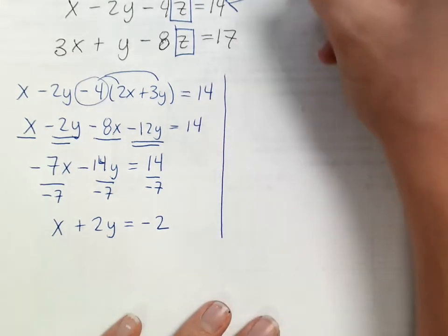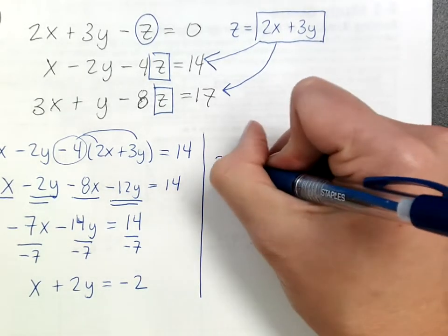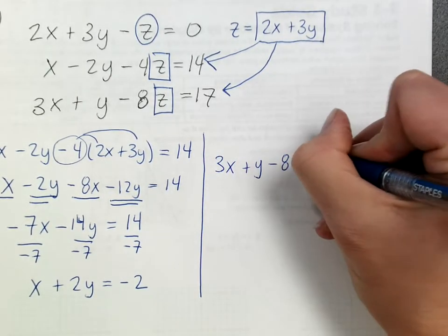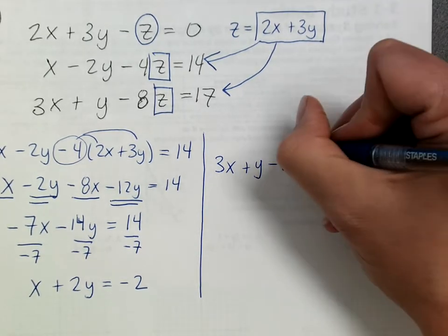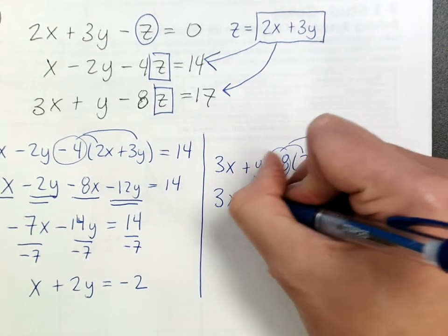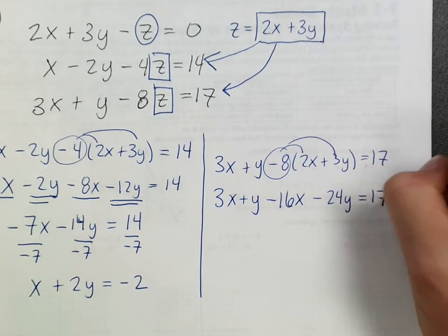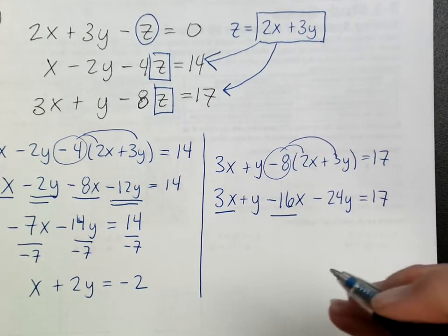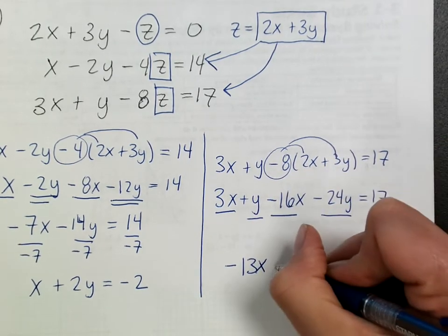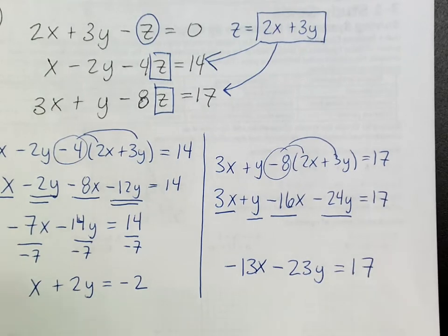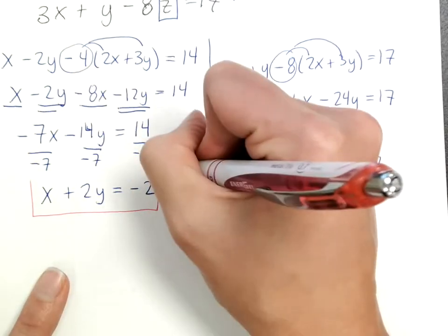Looking at the second equation, when I plug z = 2x + 3y in: 3x + y minus 8(2x + 3y) = 17. Distributing the negative 8: 3x + y minus 16x minus 24y = 17. Combining like terms: negative 13x minus 23y = 17.